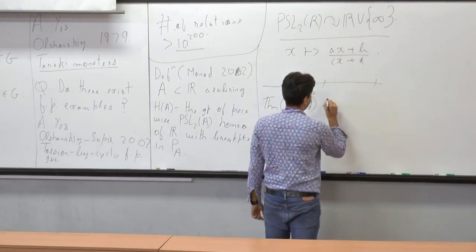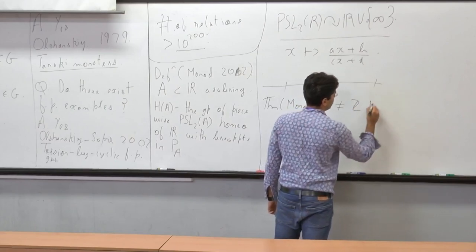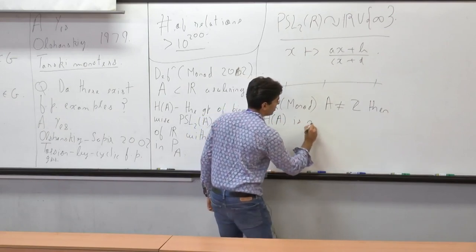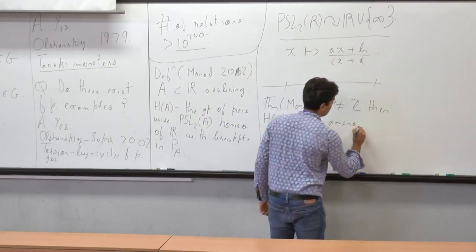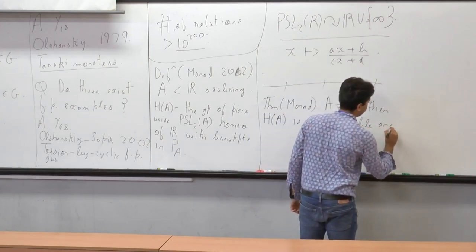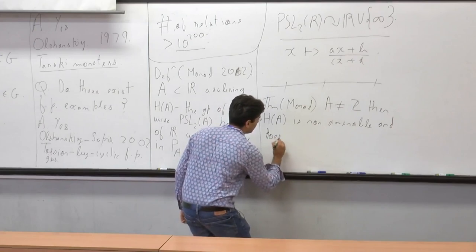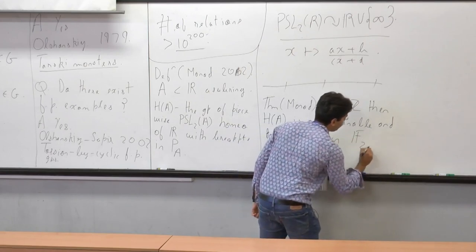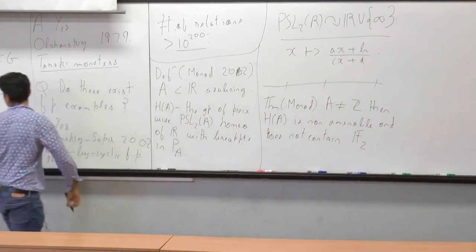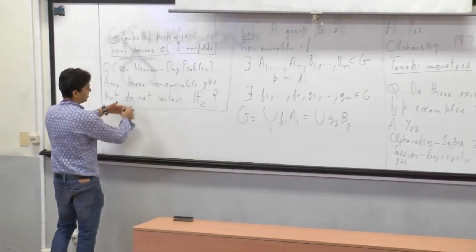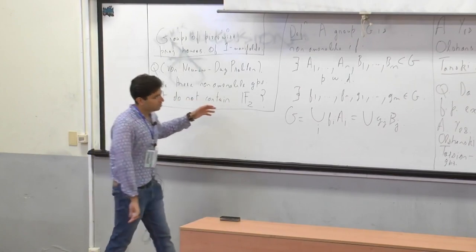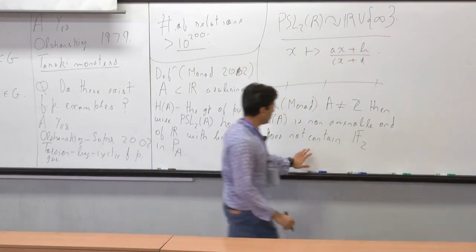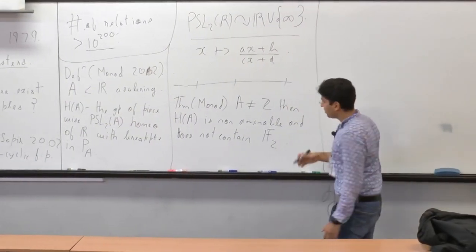The theorem of Mano is that if A is not equal to the integers, then H(A) is non-amenable and does not contain F₂. So these are really beautiful counterexamples — originally stated as a conjecture that there shouldn't be any non-amenable groups without free subgroups. These are very concrete, easy to understand examples. However, they're not finitely presentable. In fact, they're not even finitely generatable.